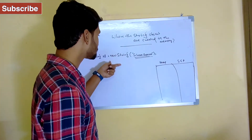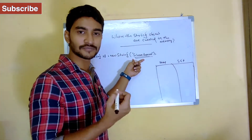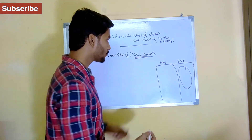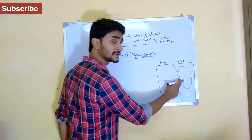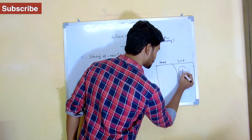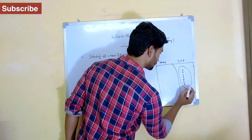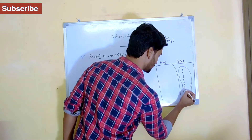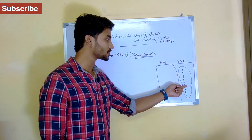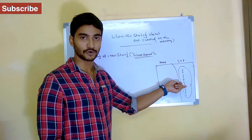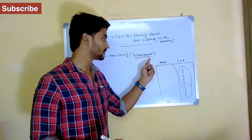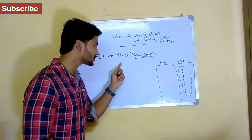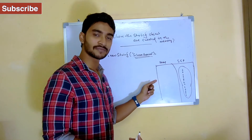Whenever we create an object using the new keyword, let's see what happens behind the scene. 'Selenium Express' is a constant, right? So JVM is going to first create an object inside your string constant pool. Because Selenium Express is a constant, JVM is going to create an object inside the string constant pool called 'Selenium Express' — just remember, it's a constant, so it goes to the string constant pool.